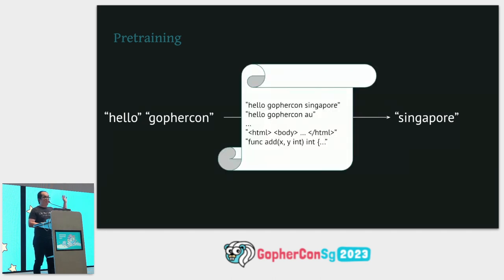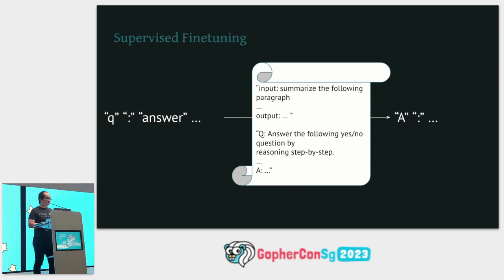You might copy the internet and put it as an input dataset into the LLM. This is also where the LLM gets the vast majority of its knowledge. After pre-training the LLM, you give it a different set of training data — something more curated — and teach the LLM how to do things.